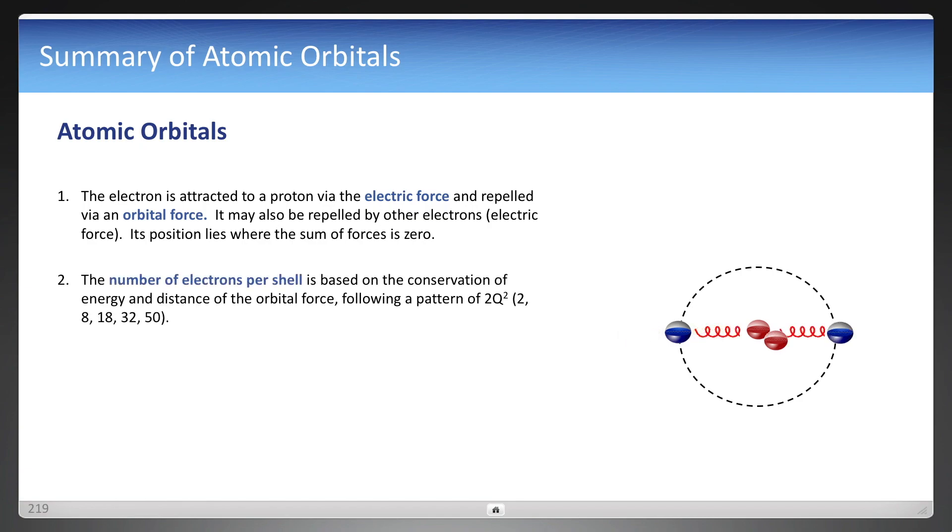The number of electrons per shell is really just the conservation of energy following that pattern 2q squared I mentioned on the previous page. And the alignment or the spin of protons is the reason for the quantum leaps.